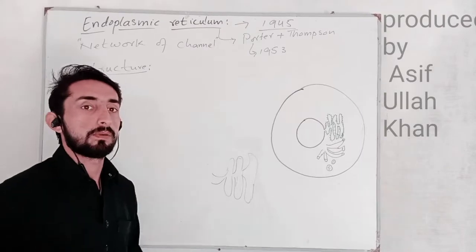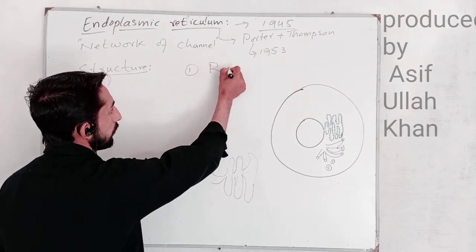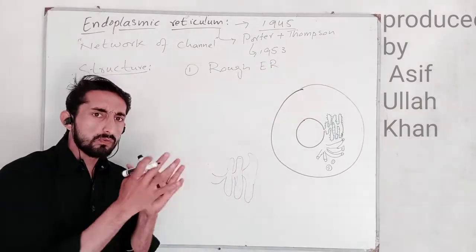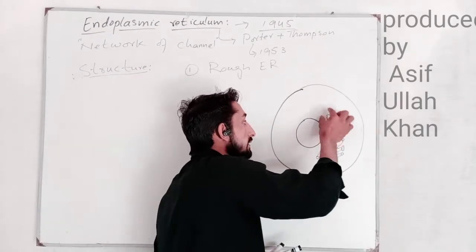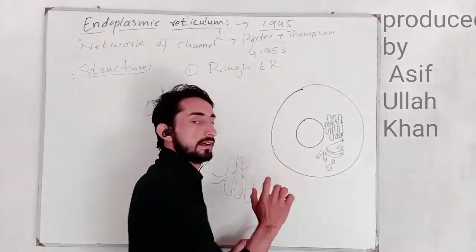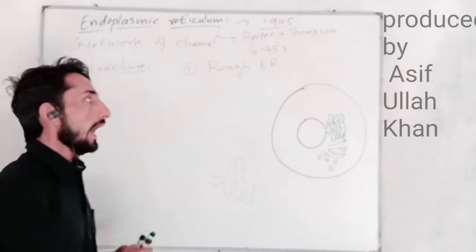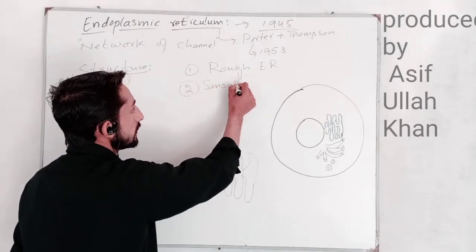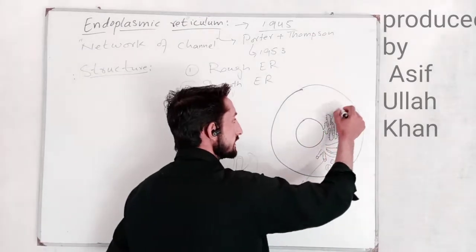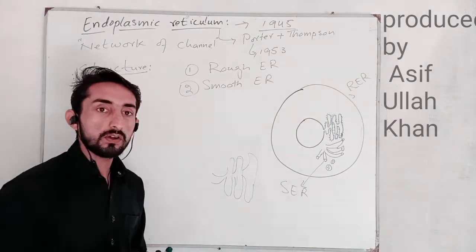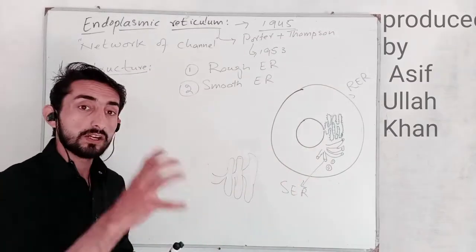There are two types of endoplasmic reticulum. The first one is the rough endoplasmic reticulum. We call it 'rough' because, when seen under the microscope, ribosomes are present on its surface — that is why it is rough ER. The second one is the smooth endoplasmic reticulum, which has no ribosomes on its surface.